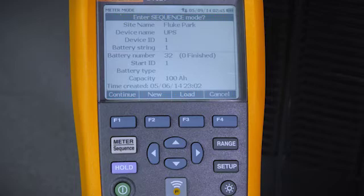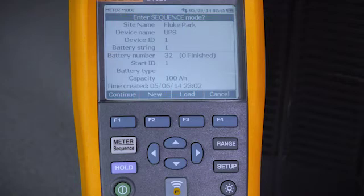We've created a sequence name for this site, which is Fluke Park. Our device name is UPS. For the purpose of this demonstration, we'll assume we have 32 batteries in this string, supplying power to the UPS.